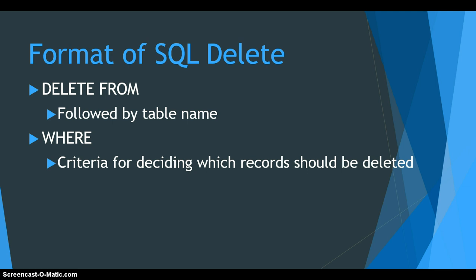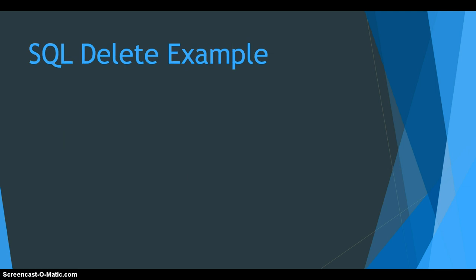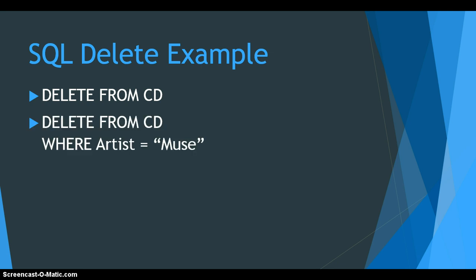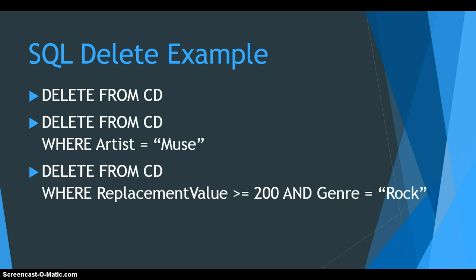Or maybe you want to delete a series of records — your criteria could be WHERE replacement value is less than 100, deleting all records with a replacement value under 100. Your criteria limit how many records get deleted. For example: DELETE FROM CD deletes everything; DELETE FROM CD WHERE artist equals 'Muse' removes all Muse records; or DELETE FROM CD WHERE replacement value >= 200 AND genre equals 'rock' uses multiple criteria combined with AND or OR operators.